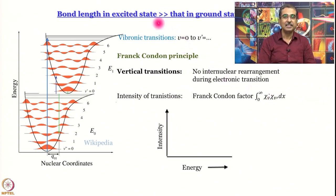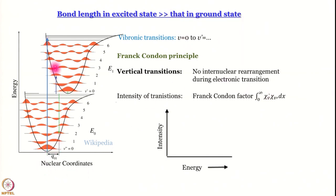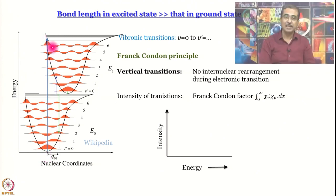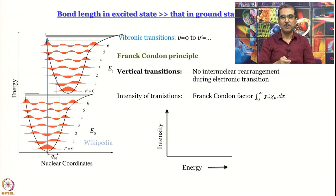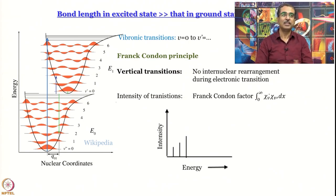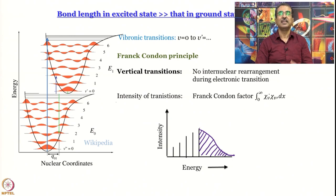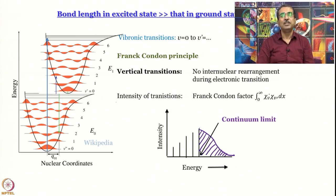Sometimes the bond length in the excited state may be very much larger than in the ground state, with the limit that it approaches infinity — meaning you would not even see a minimum. The potential energy surface just keeps decreasing as you increase the nuclear coordinate. Then the Franck-Condon factor will be maximum for some very high energy vibrational level, possibly in the continuum range. The 0–0-dash transition will have very small intensity, and as you go higher it keeps increasing until you reach the continuum — after which the molecule fragments, and instead of discrete structure you get a continuum. The energy at which the continuum sets in is called the continuum limit.